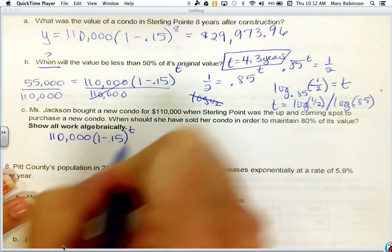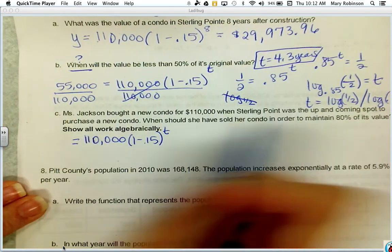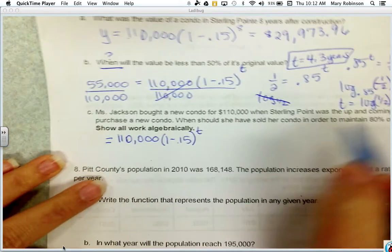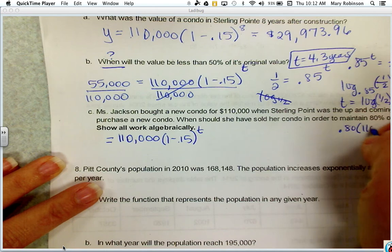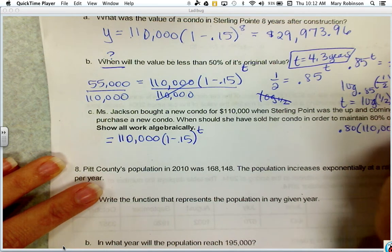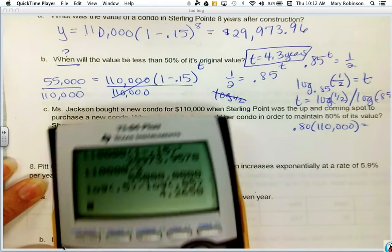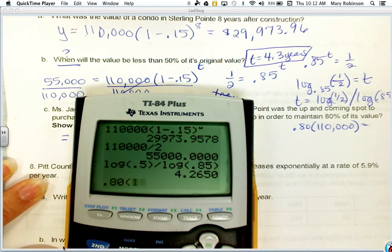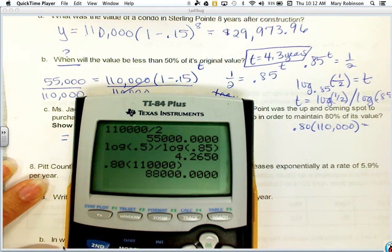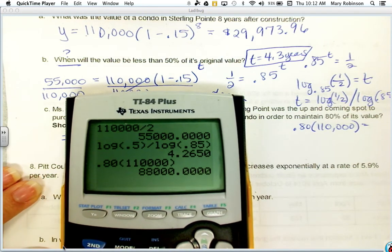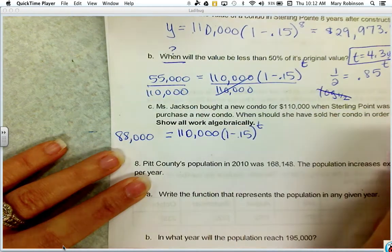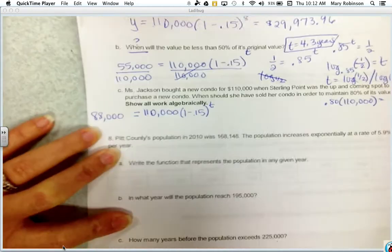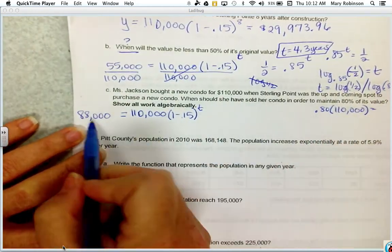And we know that it's depreciating at that same rate of 15% a year. We're trying to solve for when she should have sold it. So the final value was 80% of - so you can either find 80% of $110,000 to the side here: 0.80 times $110,000. We're trying to figure out how long would it take for the value to be at $88,000.